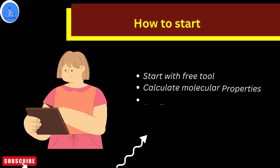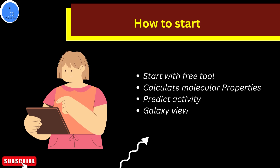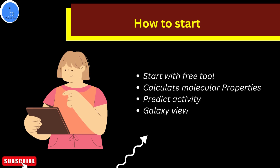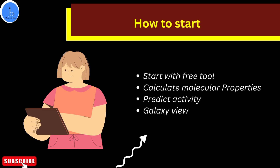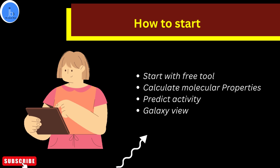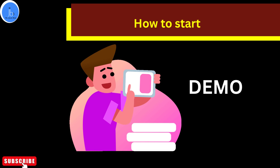I would suggest you start with the free web tool of Mol Inspiration, where you can get molecular property ideas like P-log value, polar surface area, hydrogen bond donors and acceptors, and crucial values related to Lipinski's rule. Start with predicting and calculating properties related to Lipinski's rule. I will be showing you a practical demonstration also, so stay tuned.